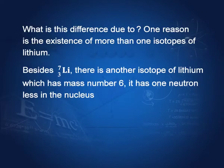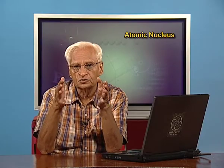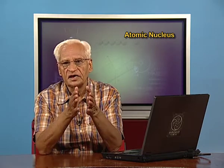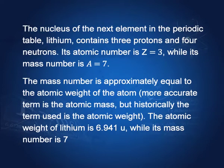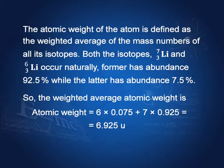One reason for the difference is the existence of more than one isotope of lithium. An isotope is a nucleus with a different mass number. Besides lithium with mass number seven, there is another isotope of lithium with mass number six, which has one fewer neutron in the nucleus. When these two are mixed, the atomic weight of lithium becomes 6.941 u. The atomic weight is defined as the weighted average of the mass numbers of all its isotopes.